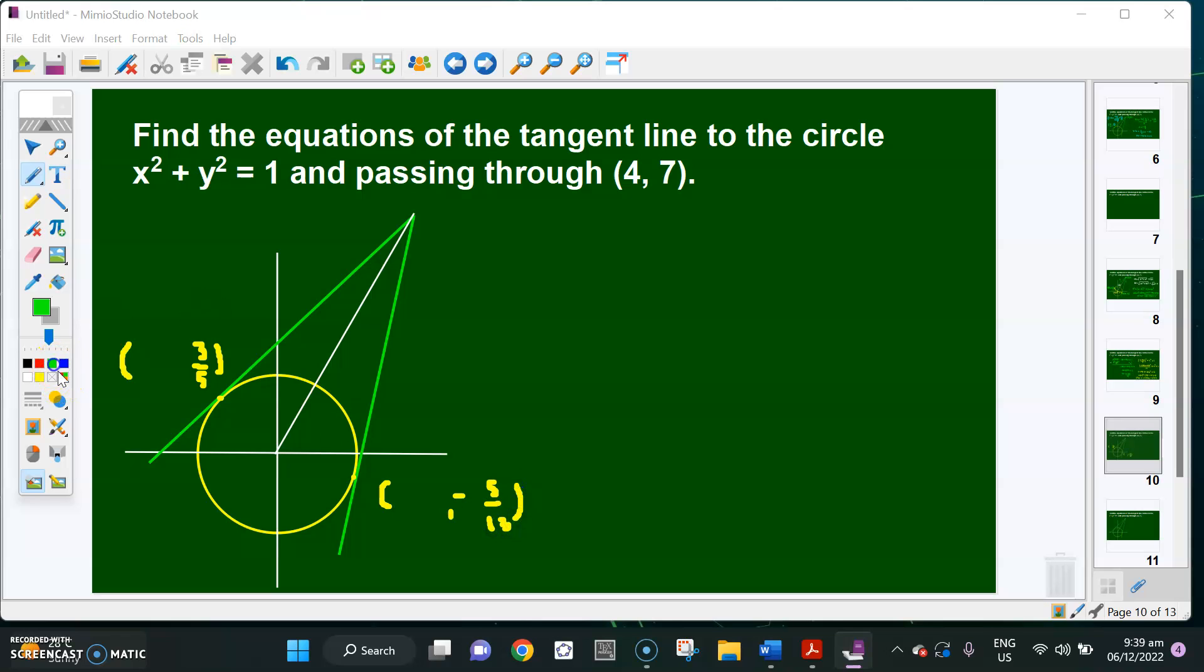This is point (4, 7). We're almost there. I need to get the abscissa, and then that's it. Get the slope and then use point-slope form.